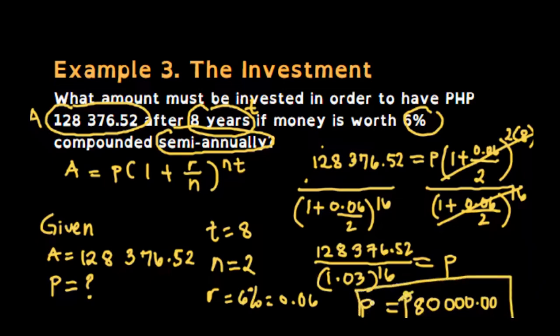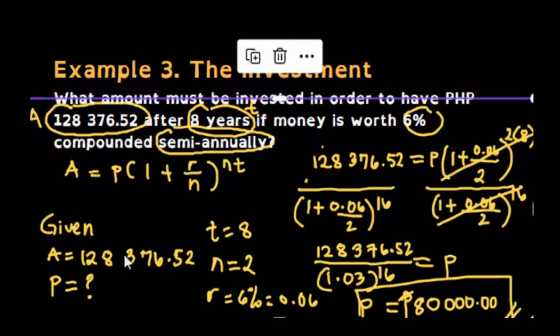So 80,000 pesos is what you must invest to earn 128,376.52 after 8 years at 6% compounded semi-annually. This is your initial amount. That covers compound interest in terms of investment and deposits.